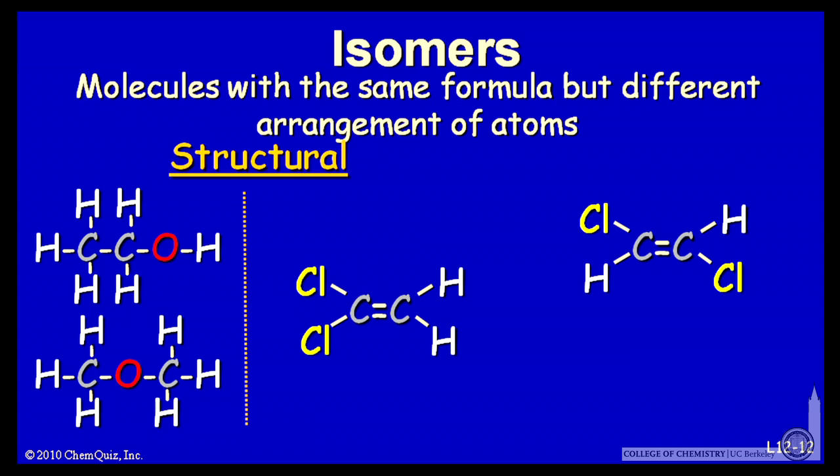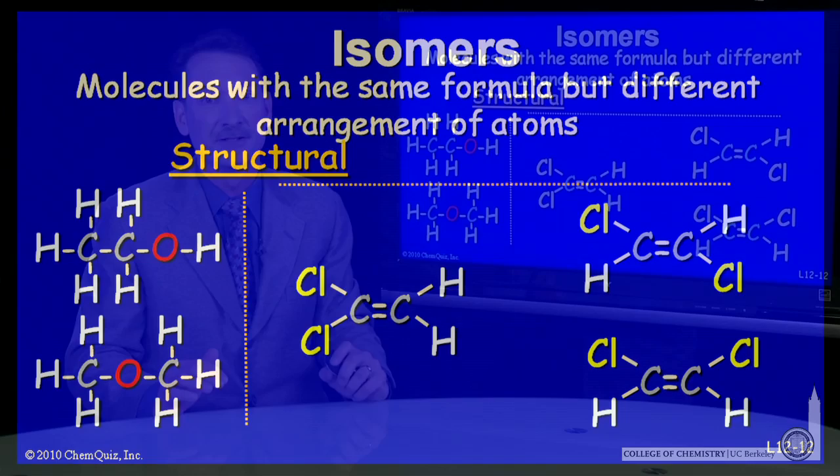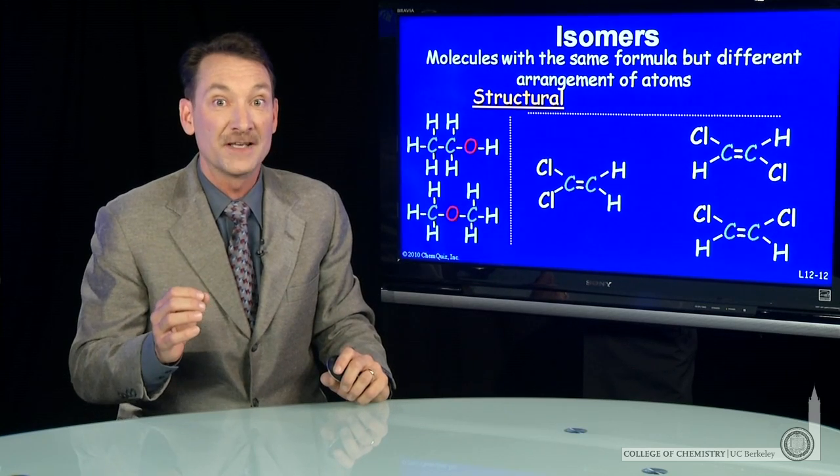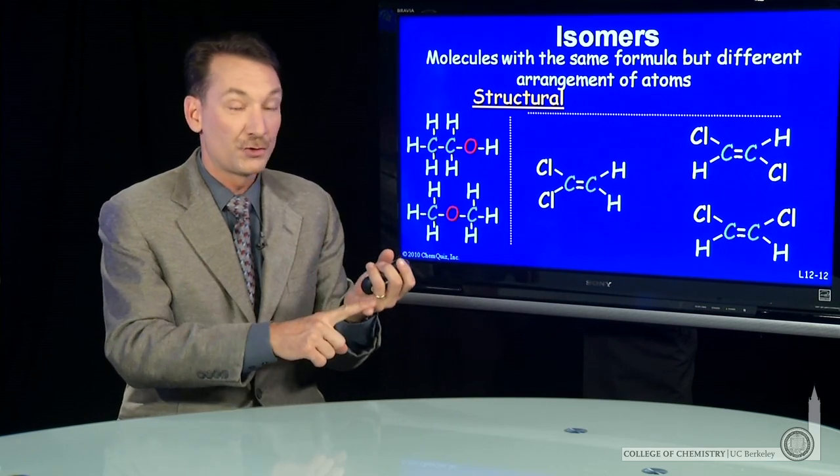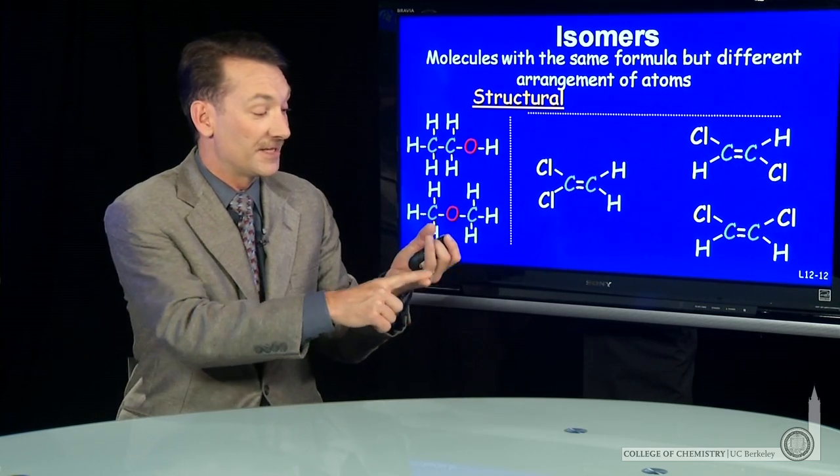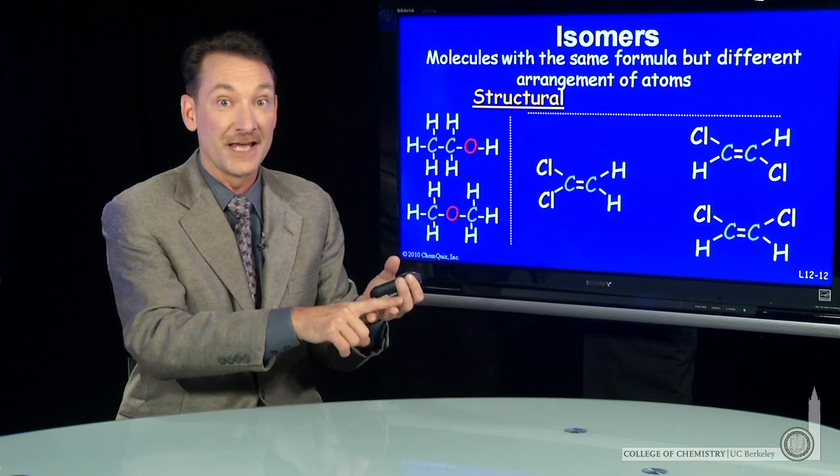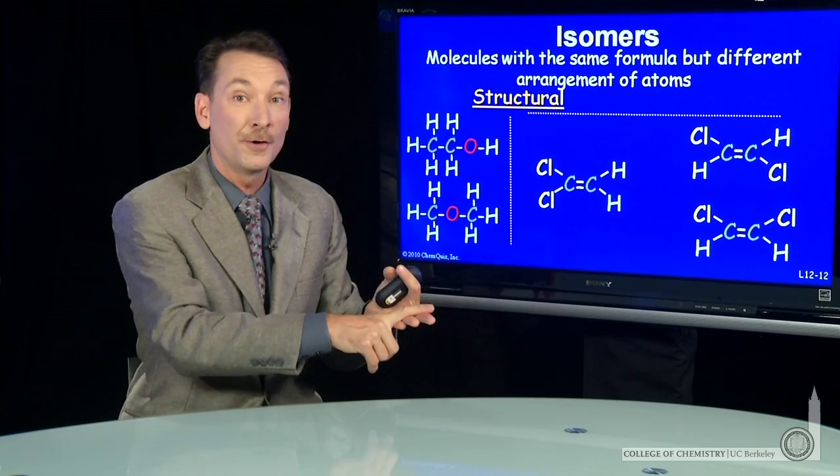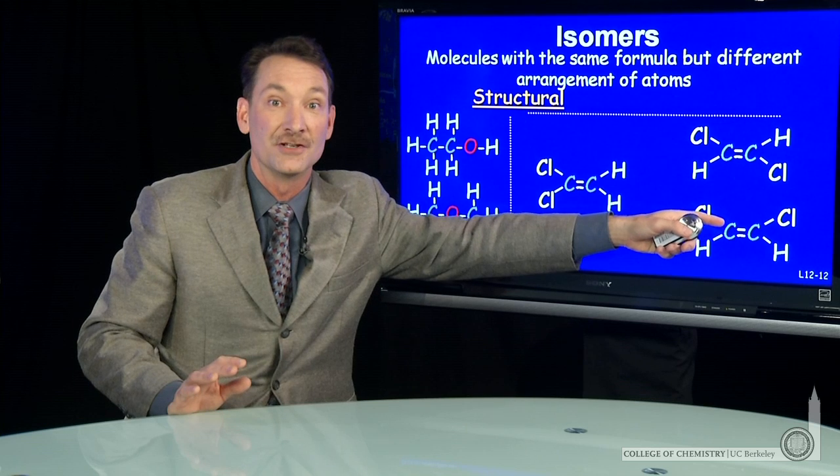This structural isomer I can arrange in a more subtly different way, where the two carbons still have a chlorine and a hydrogen attached to them, but the orientation of a chlorine has changed. That's a more subtle form of isomerism where the structure, bonding patterns, connectivities, and chemical formulas are the same, but an orientation has changed.